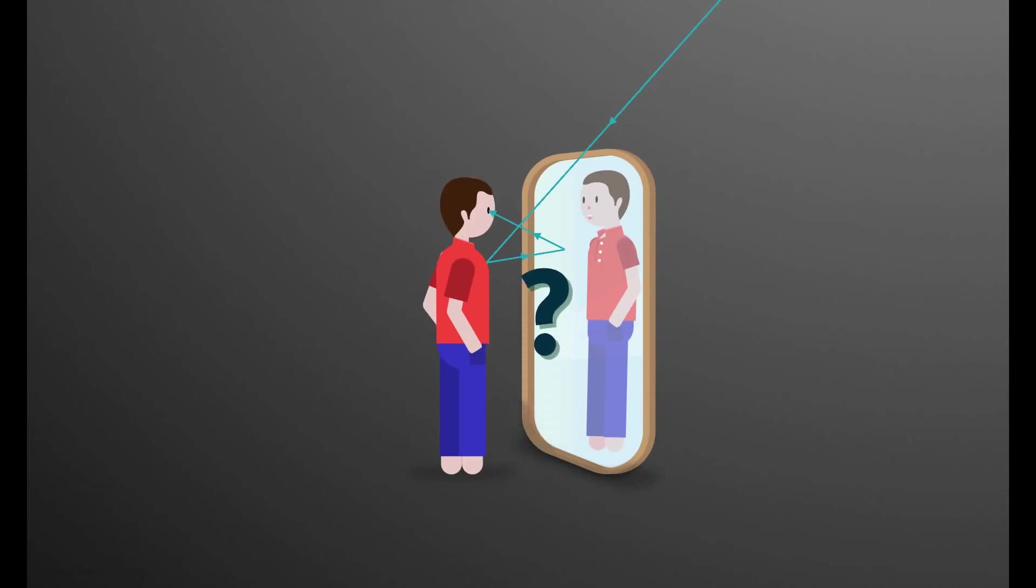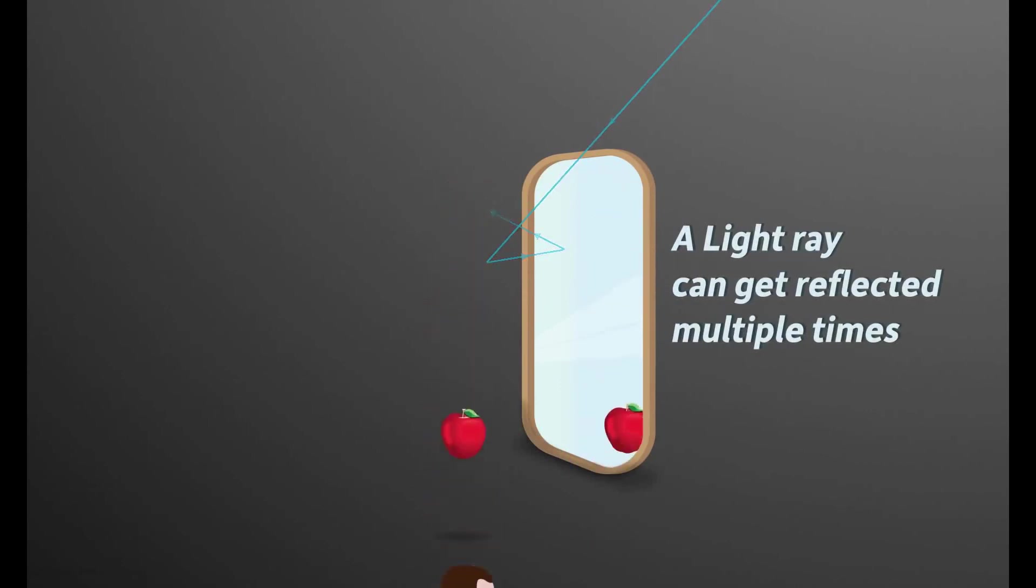So what does this tell us? Yes, this tells us that a light ray can get reflected multiple times. The same thing happens for every other non-luminous object as well. If you remember, my initial goal was to explain what virtual and real images are.